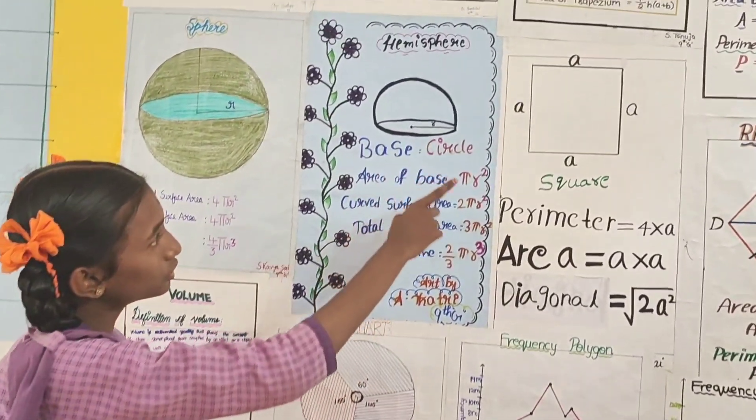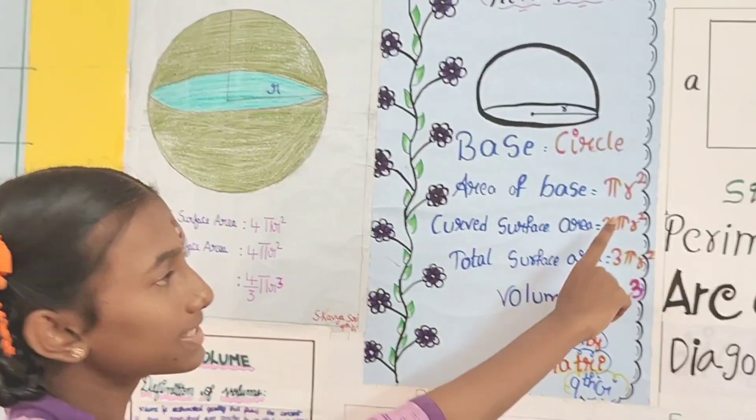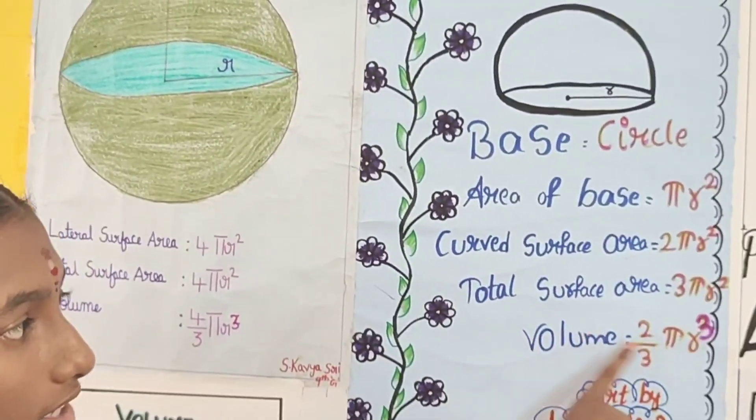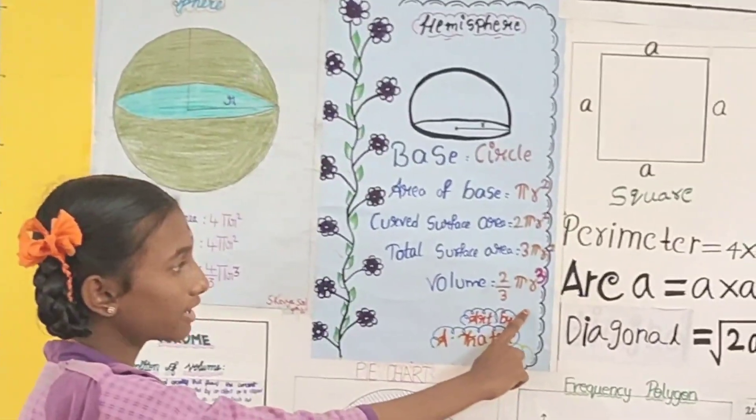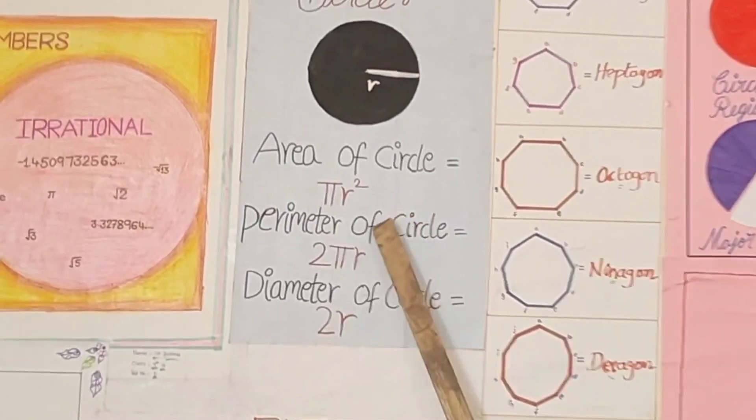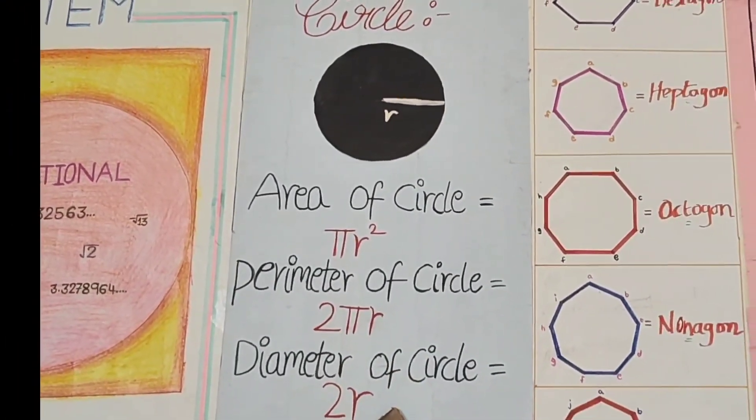Hemisphere. This is three-dimensional figure. Base of hemisphere is circle. Area of base is pi R square. Curved surface area is 2 pi R square. Total surface area is 3 pi R square. Volume is equal to 2 by 3 pi R cube. This is a circle. Area of circle pi R square. Perimeter of circle 2 pi R. Diameter of circle 2R.